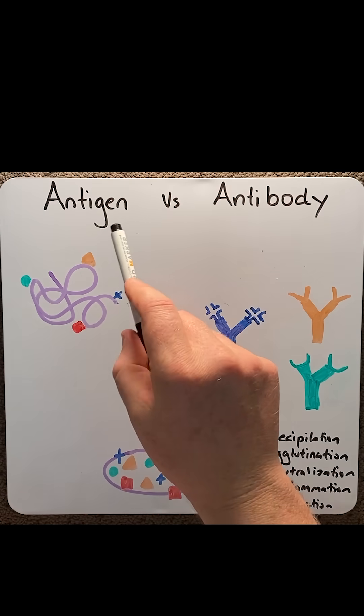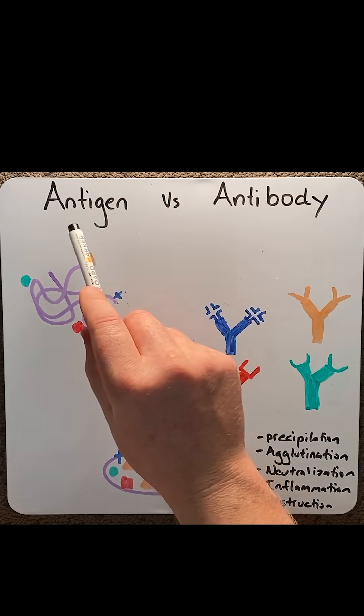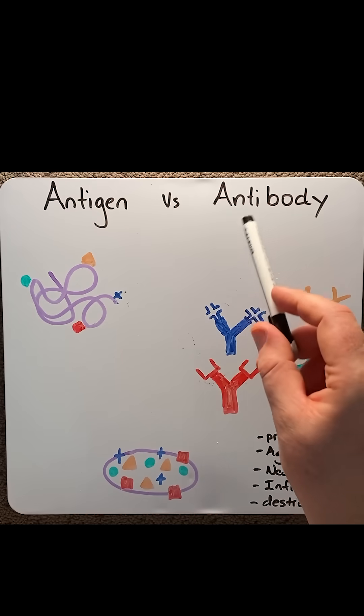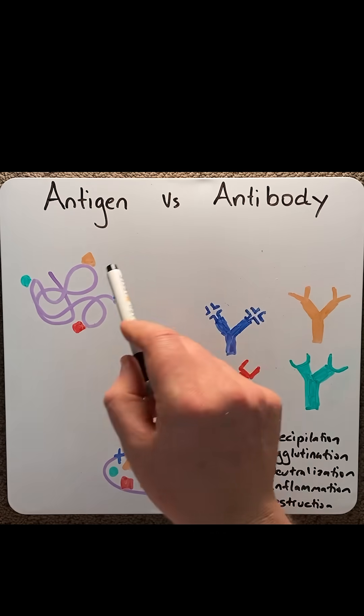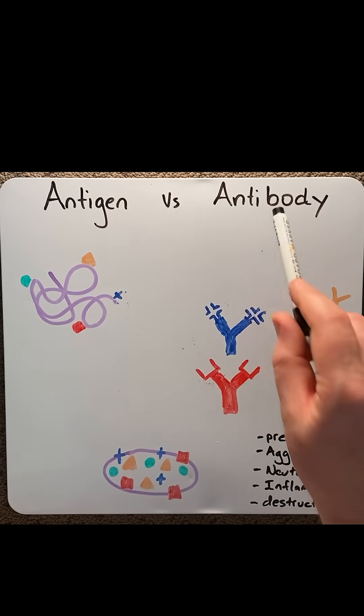In immunology, where we study the immune system, we will come across these terms: antigen and antibody. For many of us, these are confusing terms. So in this video, we'll illustrate the differences between an antigen and an antibody.